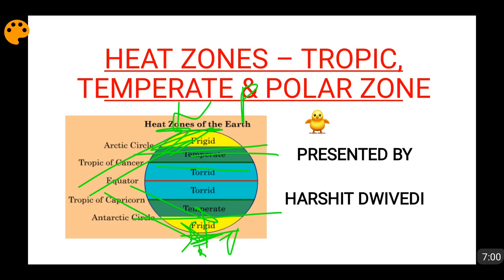These areas will naturally become cold. Also, one pole at a time remains dark for at least six months, while at the same time the other pole is in complete light, and this reverses after six months. I will be discussing this further in the equinoxes and solstice video.